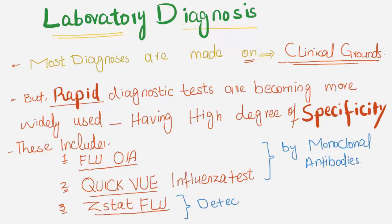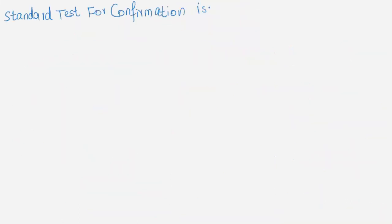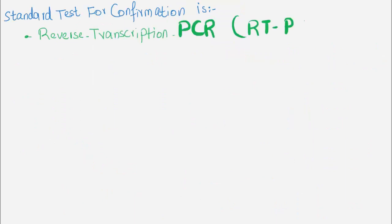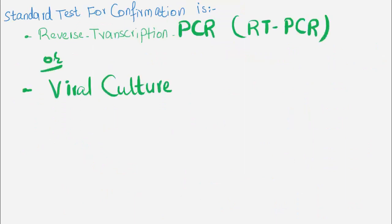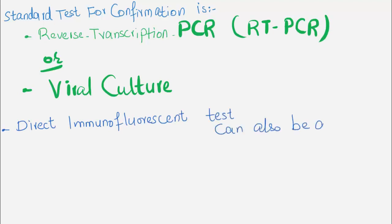The Z-Stat Flu test. The first two tests are based on detection of viral antigen by monoclonal antibodies, while the third test is detection of viral neuraminidase. The standard test for confirmation is reverse transcription PCR or viral culture. Direct immunofluorescent tests can also be done.